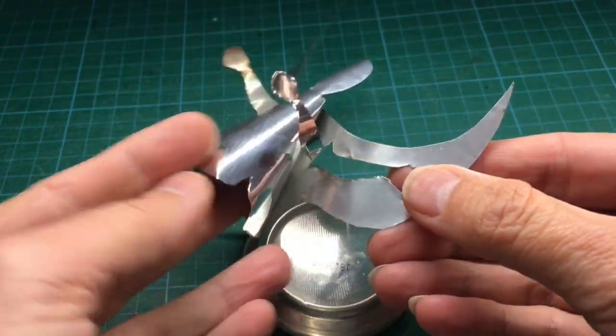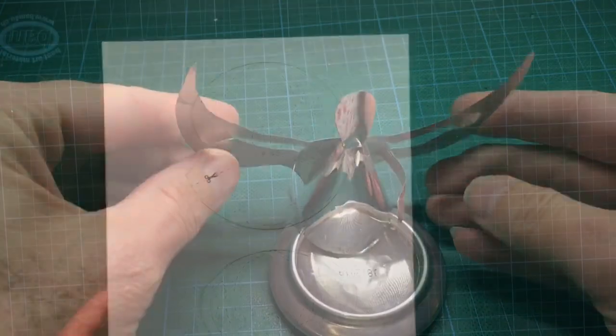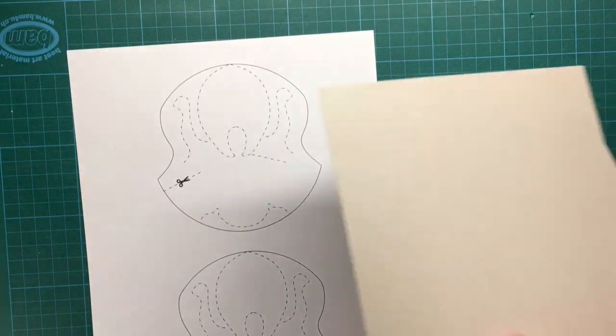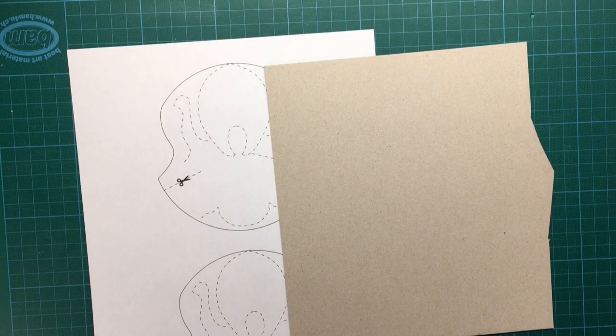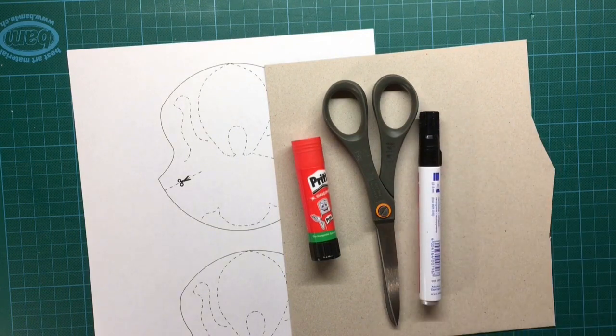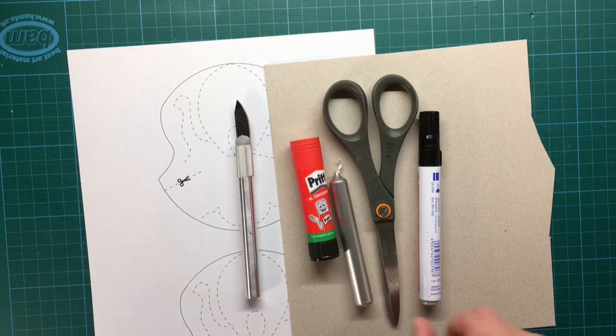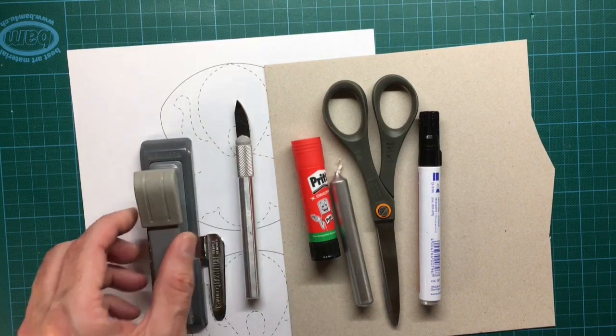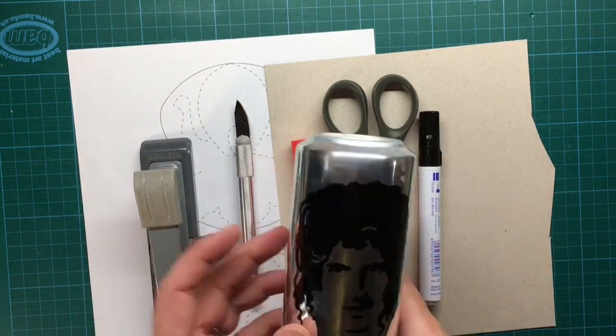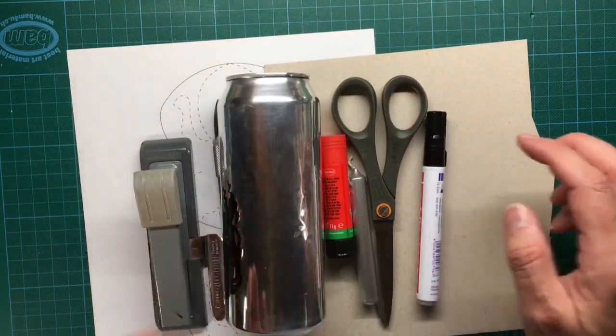You only need a few items to finish this project. First of all, you can download the template for the angel from the Instructables home page, and then you need some cardboard, some glue, scissors, a marker, a knife, a candle, a stapler, and of course the most important component: the soda can.